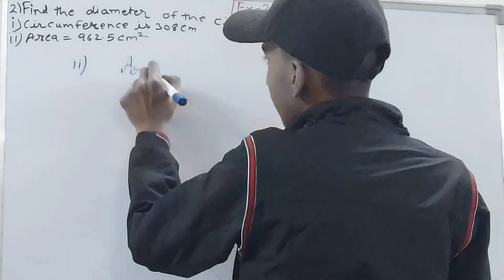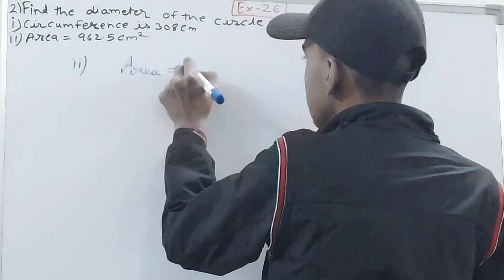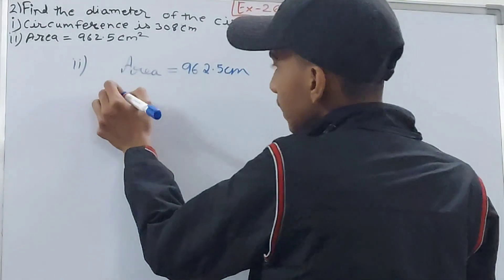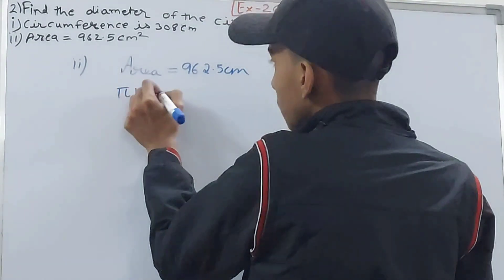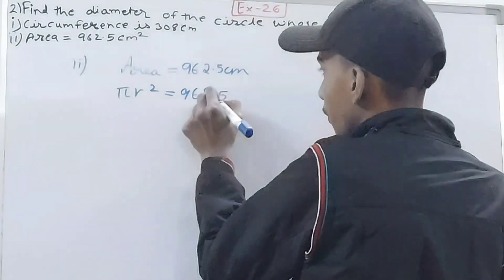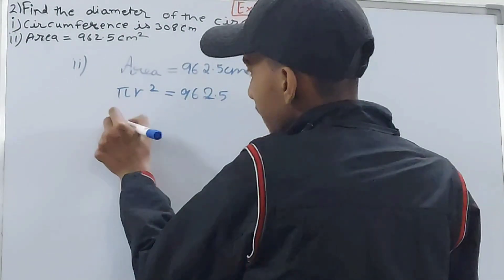Area is 962.5 square centimeters. So area equals πr² = 962.5. π can be written as 22/7, r² equals 962.5 × 7 ÷ 22.